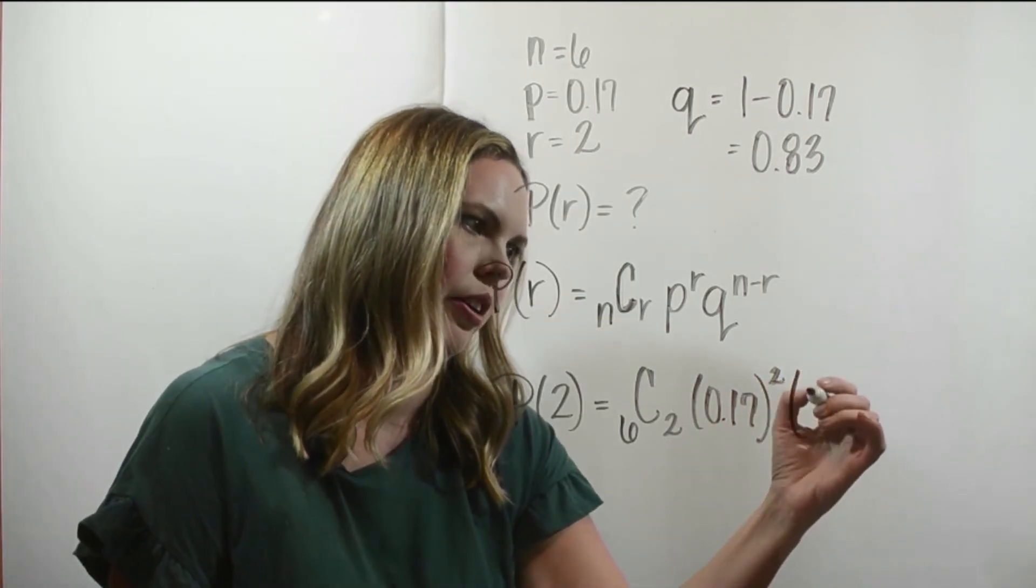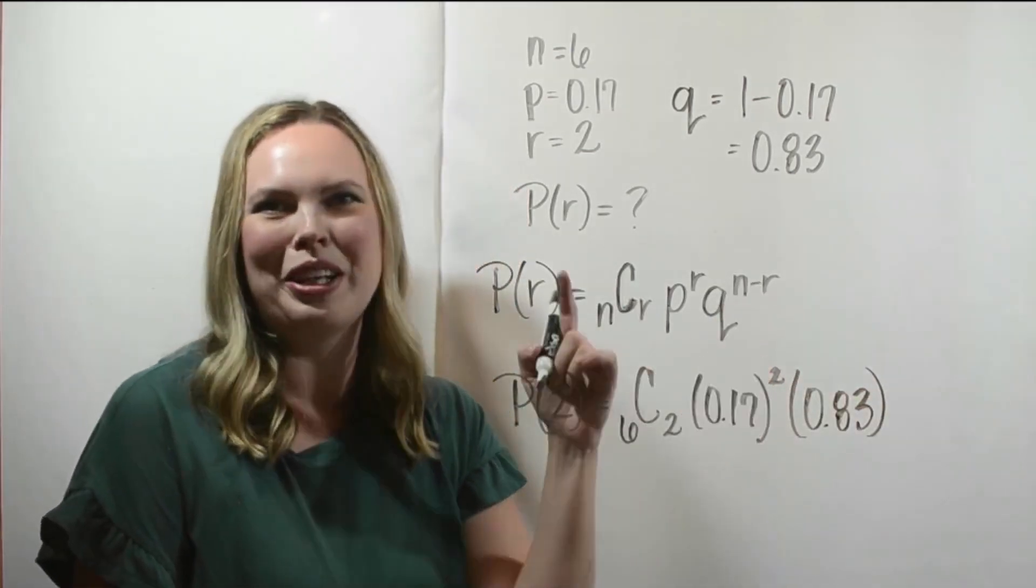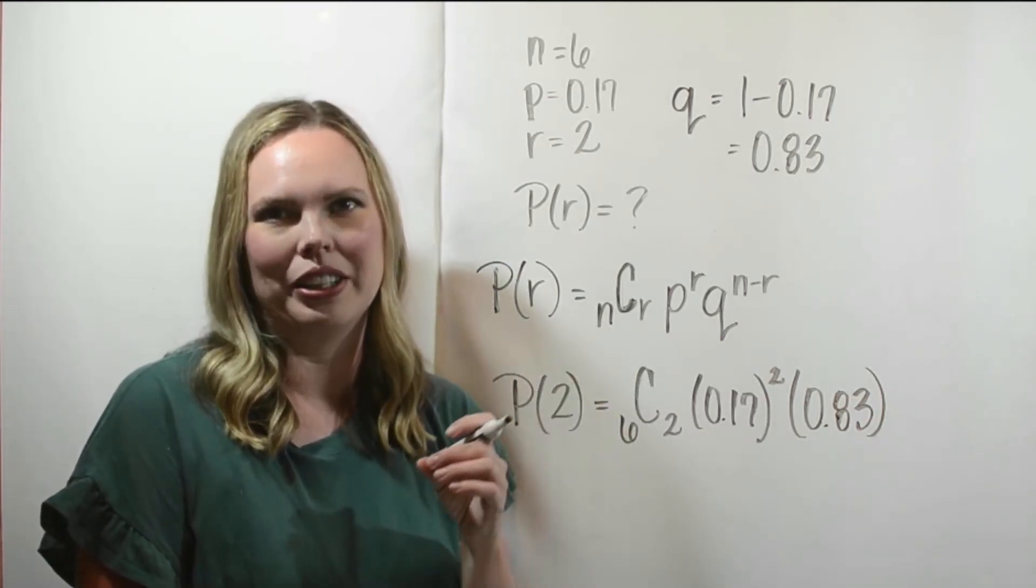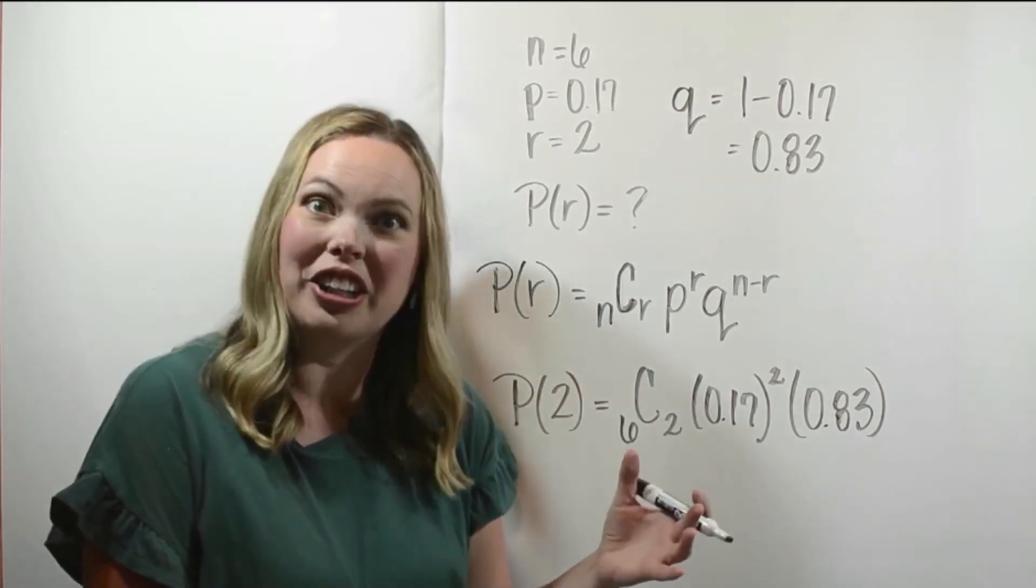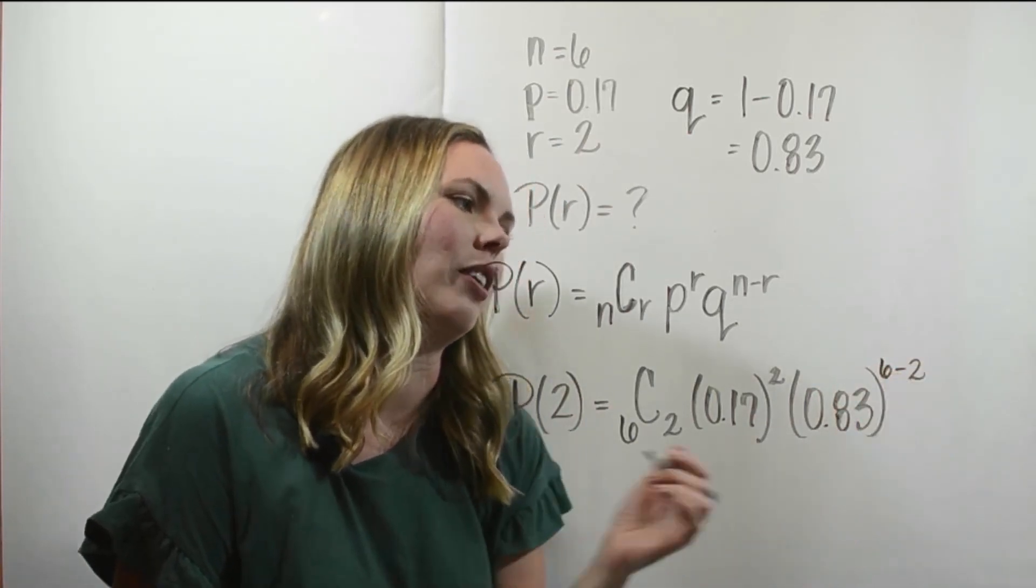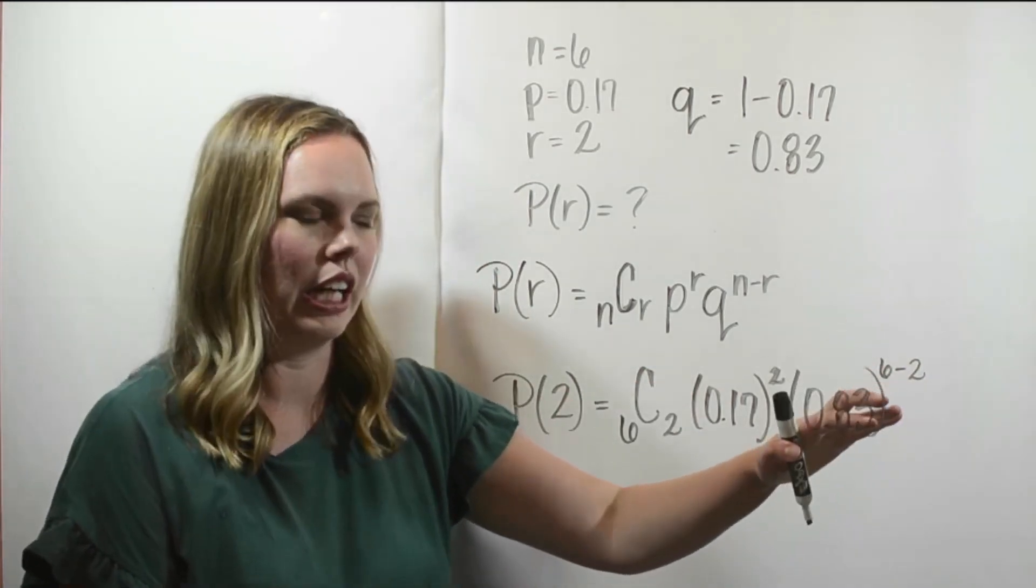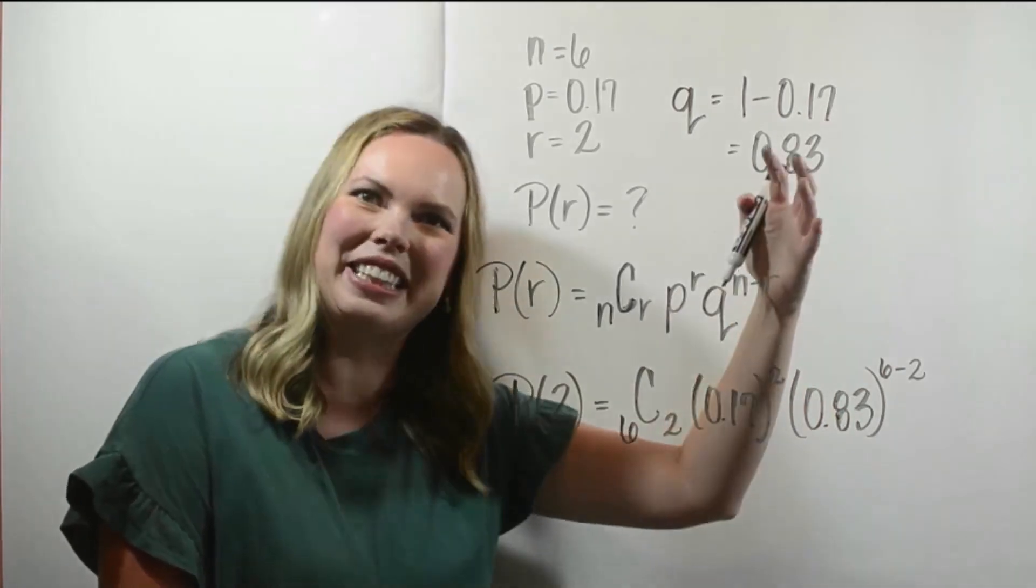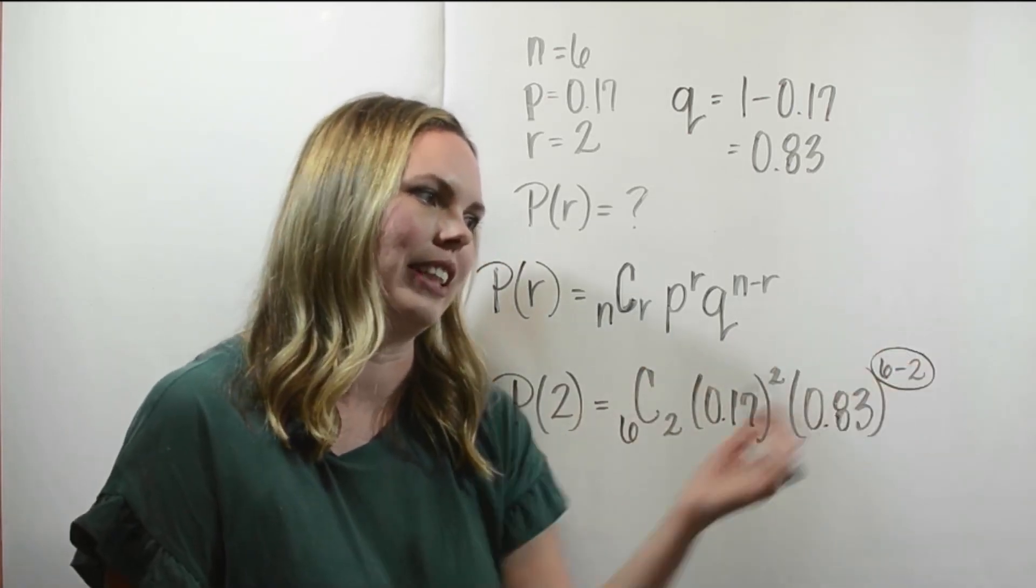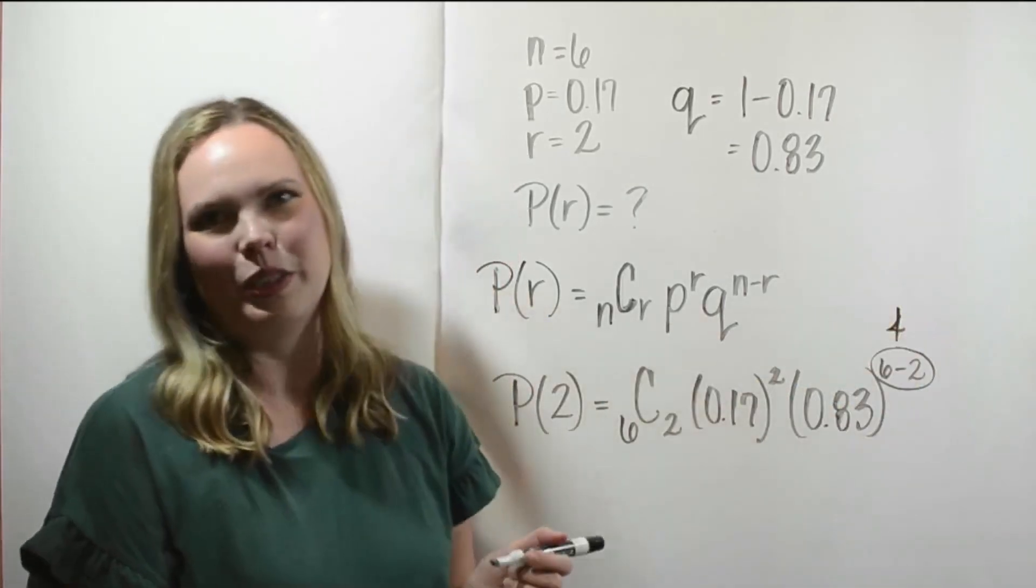And then we have our Q, which I computed to be 0.83, and it's raised to the N minus R, which would be the number of failures that you have. If you have two successes, then you're going to have the number of trials minus the number of successes, that you want failures. So that would be the 6 minus 2 here. And you can kind of think of that as the number of failures that you have. And I always like to, I don't ever plug in this in the exponent. That can get a little bit tricky in a calculator. Whether that minus 2 stays in that exponent or whether it comes back down can be a little bit problematic. So I always just go ahead and say, you can do 6 minus 2, hopefully. Just go ahead and do it. And that's what you need to plug into the calculator.